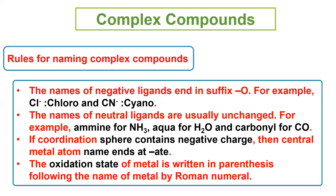H2O is written as aqua. CO is written as carbonyl. If the coordination sphere has a negative charge on the central metal atom, we add ATE to the name of the central metal atom, like platinate, cuprate (copper and platinum). The oxidation state of metal is written in parenthesis following the name of metal in Roman numerals.